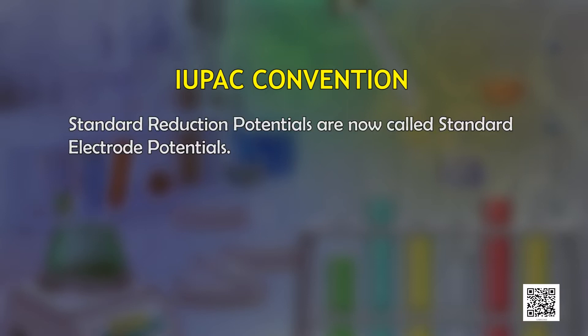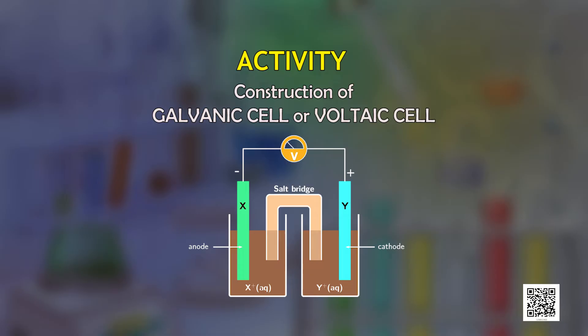According to IUPAC convention, standard reduction potentials are now called standard electrode potentials. The electrode which has low electrode potential has a tendency to get oxidized. Now let us combine these two concepts for the generation of electricity by setting up a cell called the galvanic cell or voltaic cell.